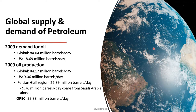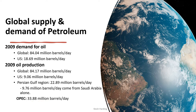We have the global supply and demand for petroleum. In 2009 the demand for oil was roughly 84 million barrels per day; in the US alone it was 18.69 million. Global production is slightly higher than demand because of surplus. The Persian Gulf was producing 2.89 million, and OPEC countries were up to 33.88 million barrels per day — that's a lot of oil being produced.